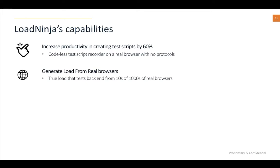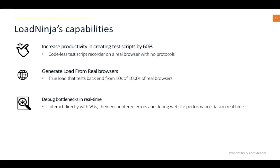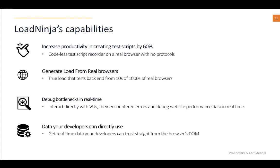Because we use real browsers, we have the ability to directly interact with a virtual user that is going through an issue, see their browser live in real time, and debug any performance issues encountered at scale. Finally, the data from our browser-based approach comes straight from the browser's DOM — the same exact data that developers use every day to build and debug applications. So if there's a performance issue, you can quickly isolate which specific element of the DOM is facing that issue and hand it off to your development team with enough information to debug and deliver high-performance applications faster.